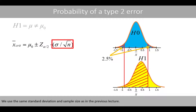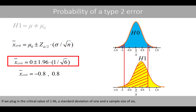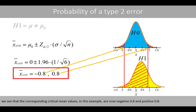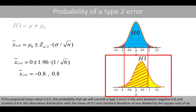We used the same standard deviation and sample size as in our previous example. If we plug in the critical value of 1.96, a standard deviation of 1, and a sample size of 6, we see that the corresponding critical mean values in this example are now negative 0.8 and positive 0.8. If the proposed mean value is 0.5, the probability that we will commit a type 2 error is the area between negative 0.8 and positive 0.8 in the alternative distribution with a mean of 0.5 and a standard deviation of 1 divided by the square root of 6.